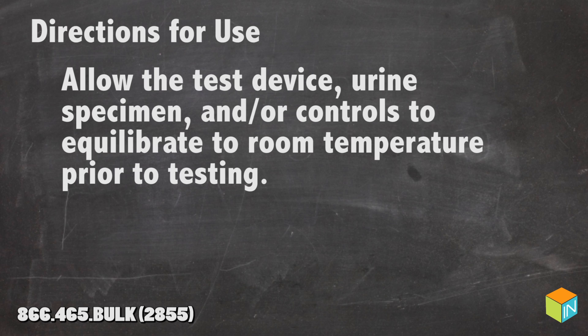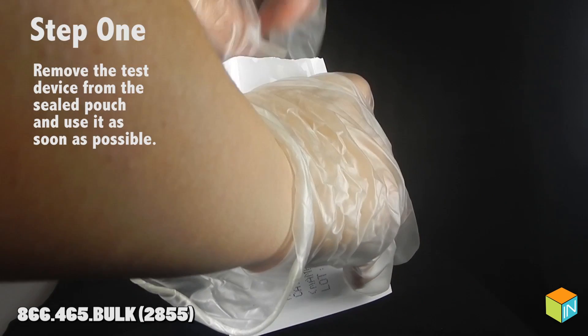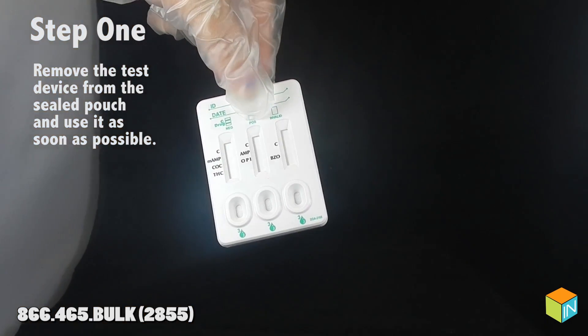Directions for Use: Allow the test device, urine specimen, and controls to equilibrate to room temperature prior to testing. Step 1: Remove the test device from the sealed pouch and use it as soon as possible.